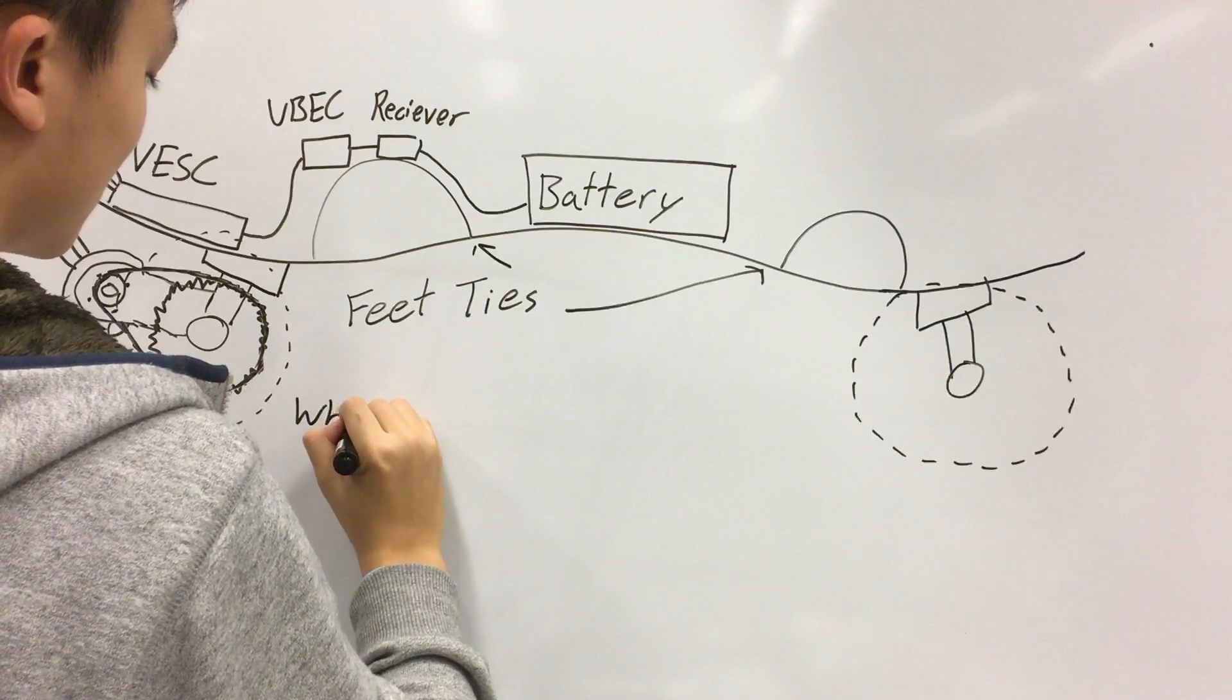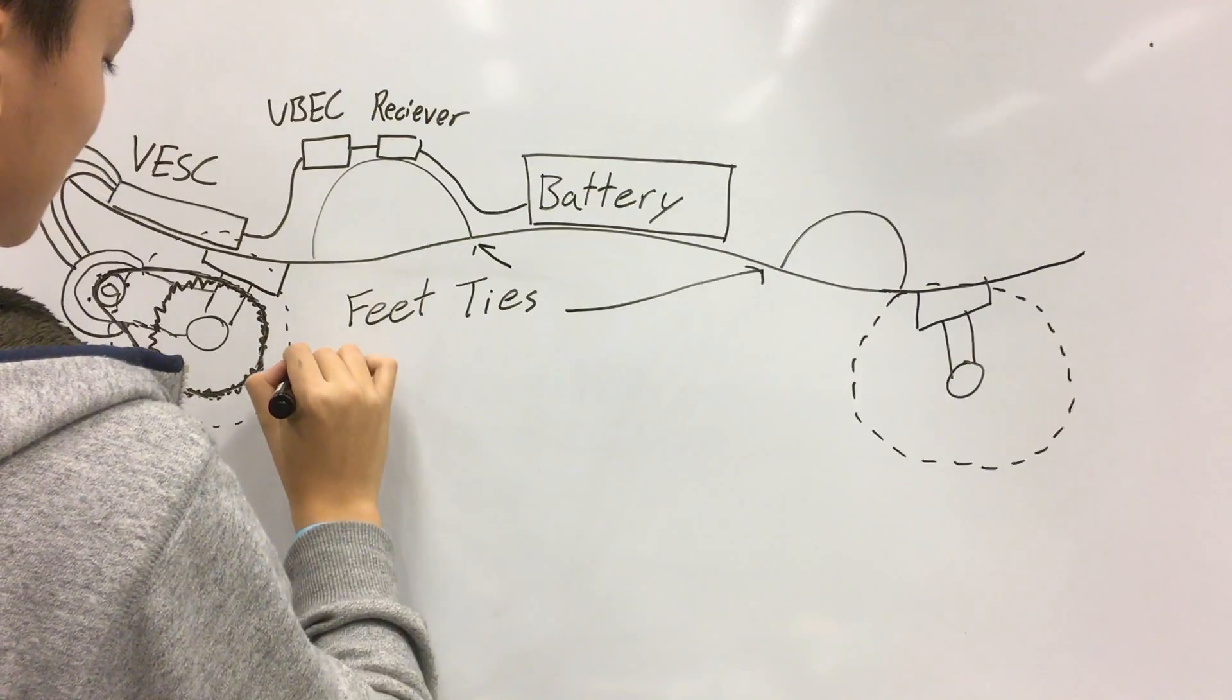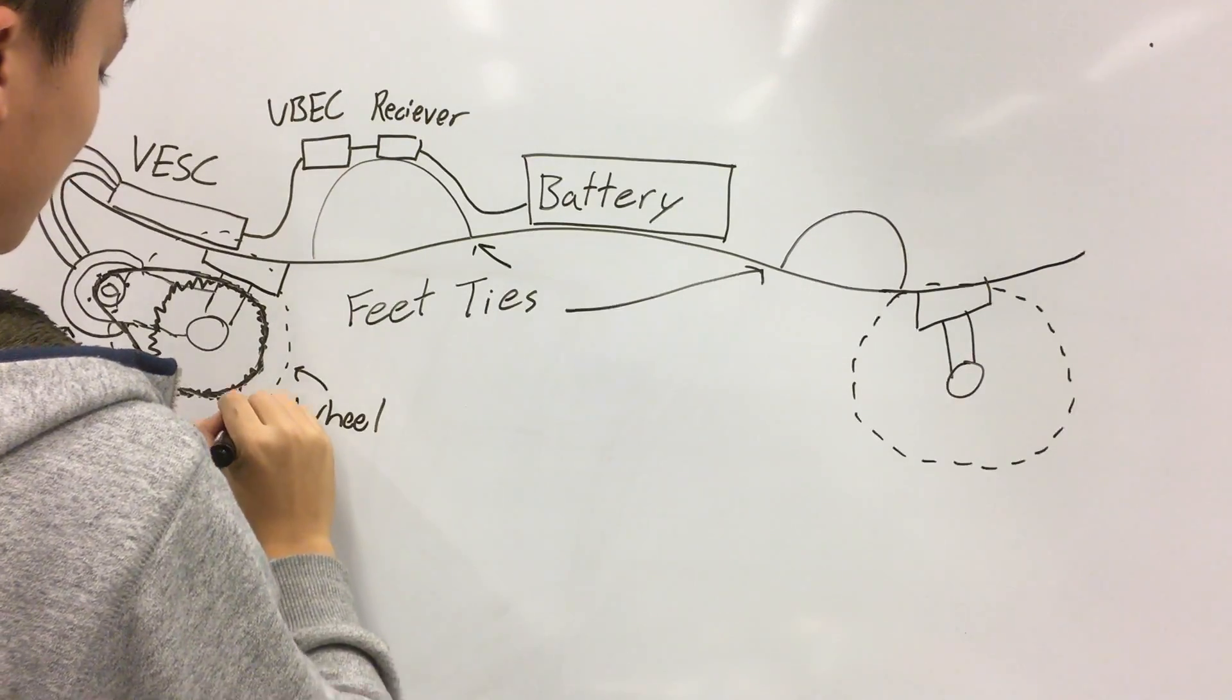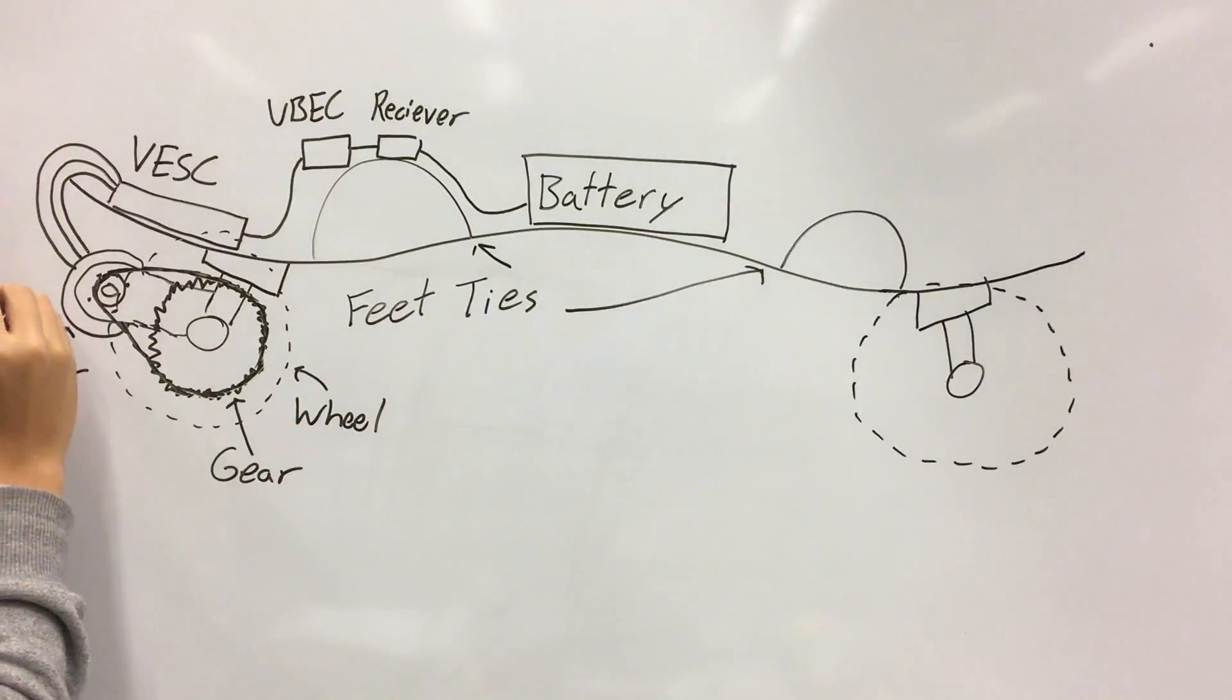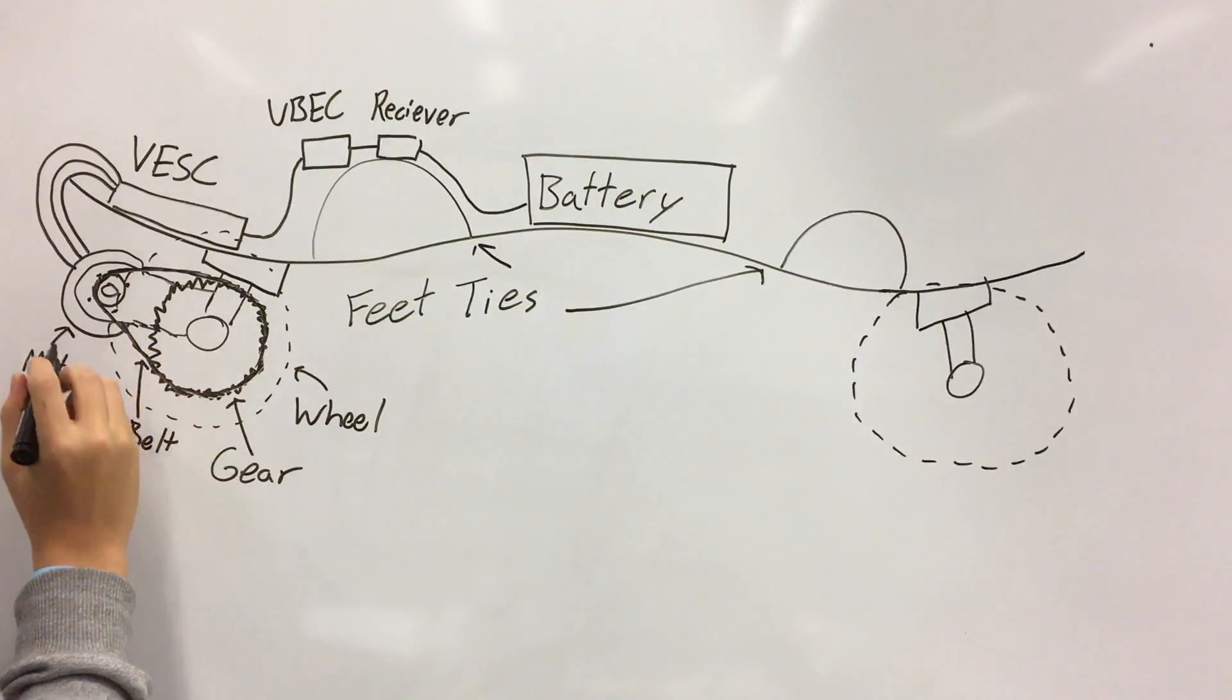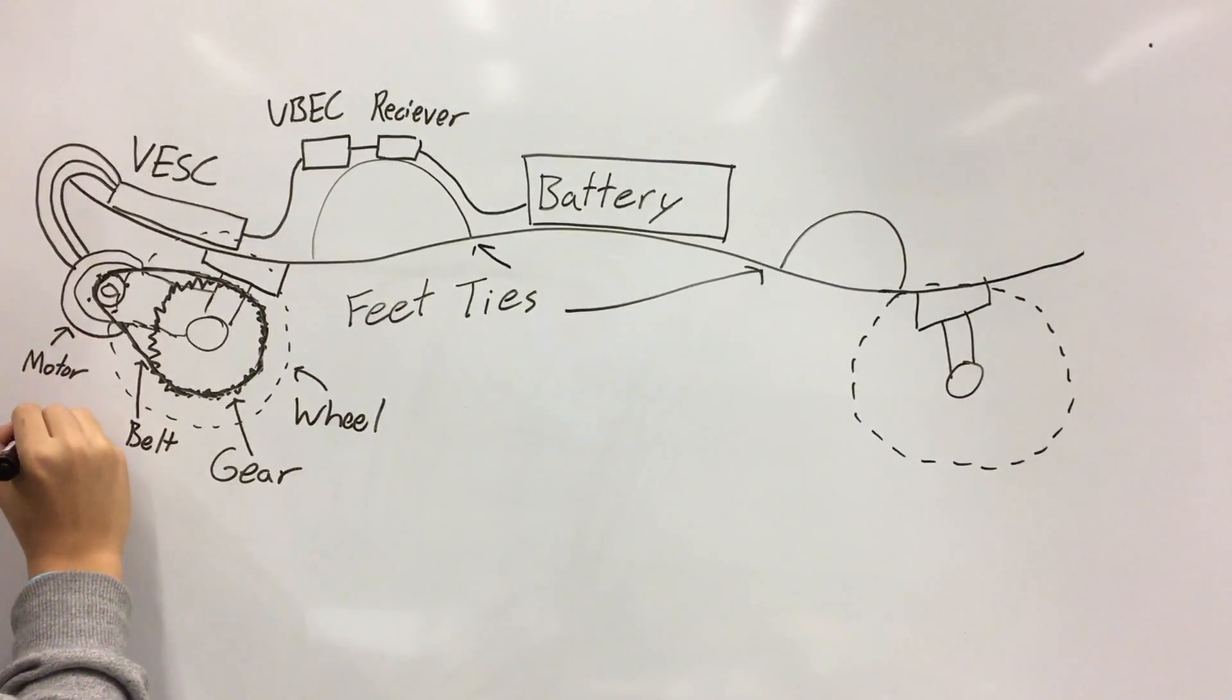So with a high KV it means that for the same amount of voltage supplied to the motor you will have a lot higher revolutions per minute. This increases the top speed of your motor, in which case increases the top speed of your skateboard.